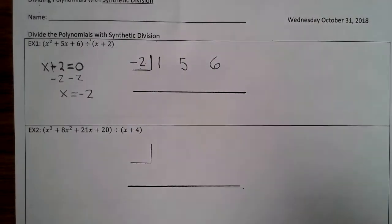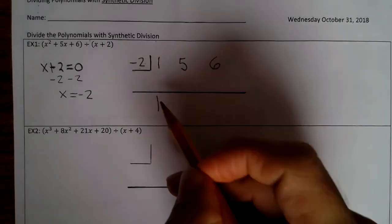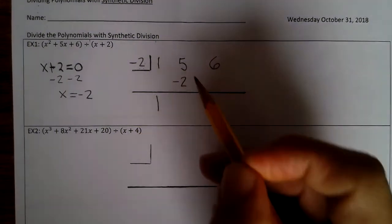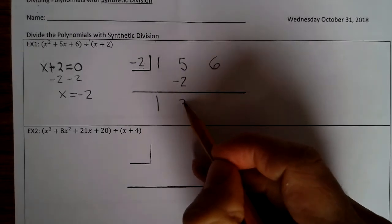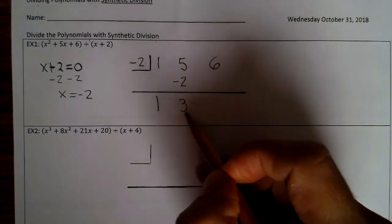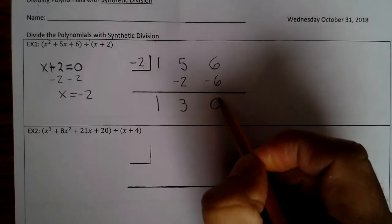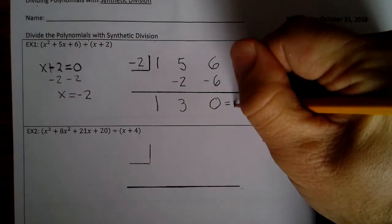Now, you bring down the 1, and we multiply. Negative 2 times 1 is negative 2. And then we combine. So 5 minus 2 is 3. And then negative 2 times 3 is negative 6. So your remainder equals 0.